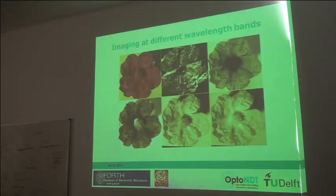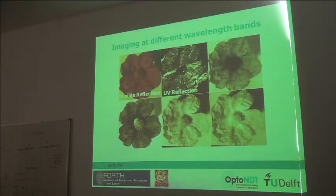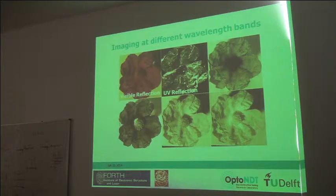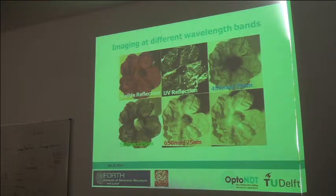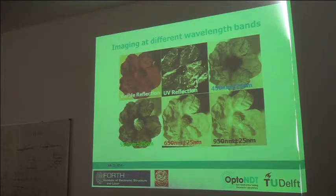Another example is a flower. This is how we see it in the visible. Insects are sensitive to UV light, so you can see how they perceive the flower differently. We can also image it in blue light, in green, in red — where there is no actual absorption of any pigment — and in higher infrared wavelengths, seeing the same image.